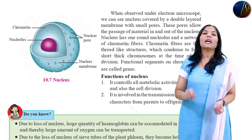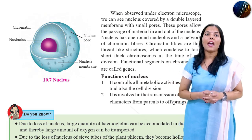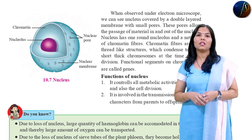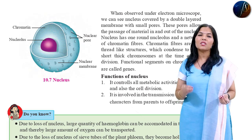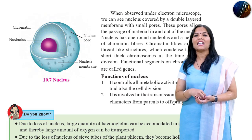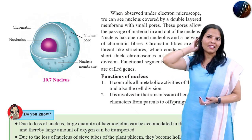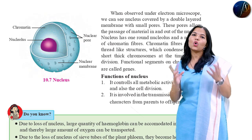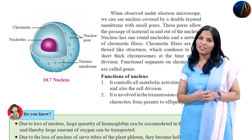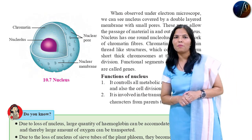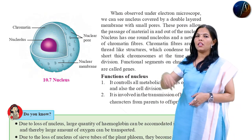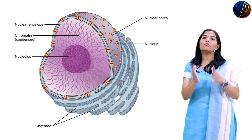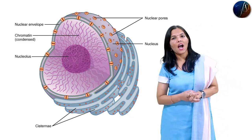Genes are present in your DNA. The hereditary characters are transmitted from one generation to the other by the nucleus, through chromosomes, through genes present in the DNA. Chromatin fibers are thread-like structures, while chromosomes have a definite shape and form during cell division.